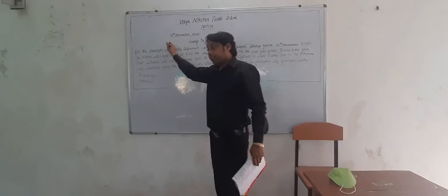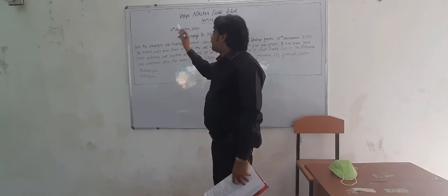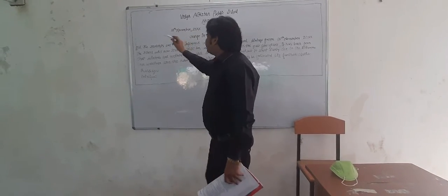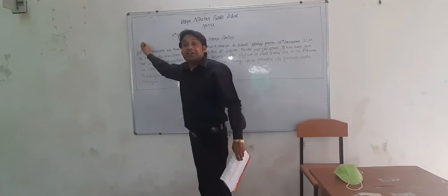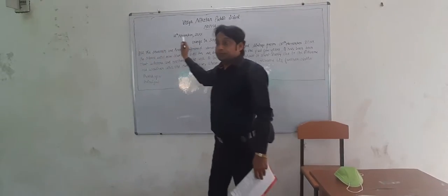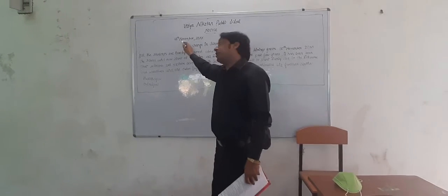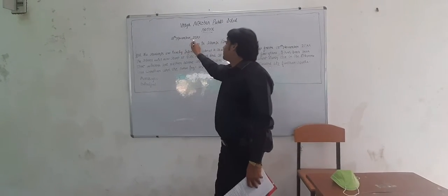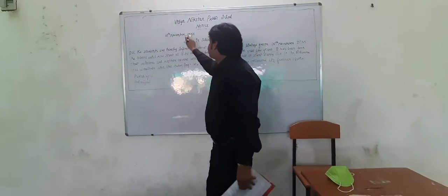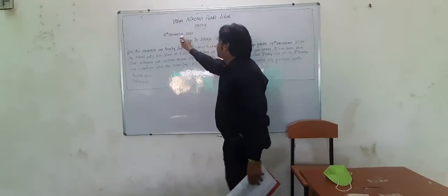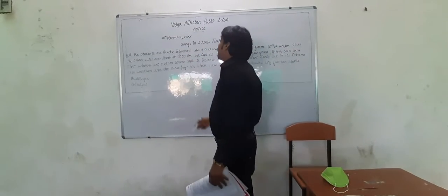Now, the date. Many students write 'DATE' or 'DATI' — do not write that label. Just write the date directly, for example: 10th November 2021. You can also write it in a fixed or conventional format. Just write the date itself — no label needed.